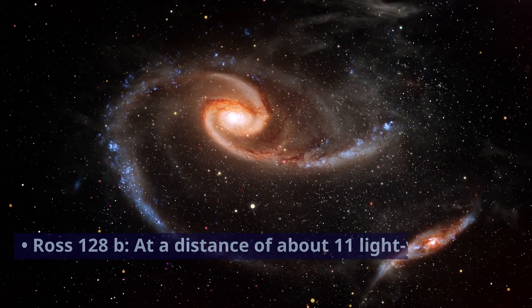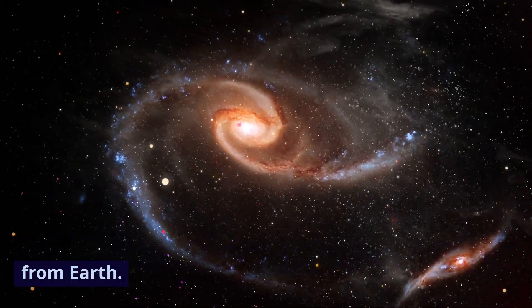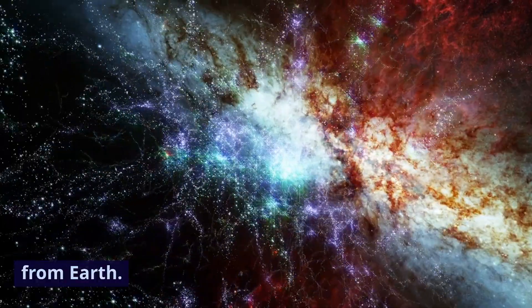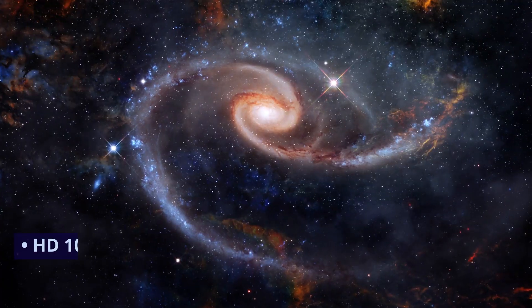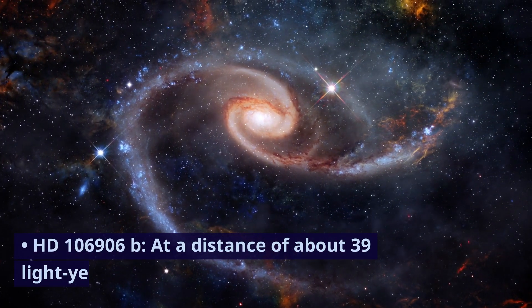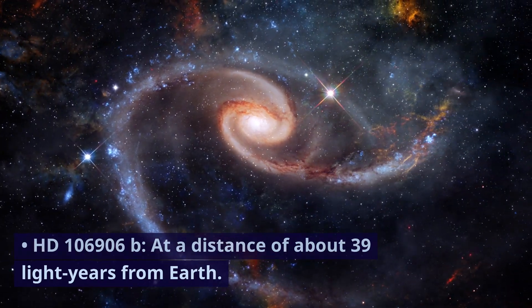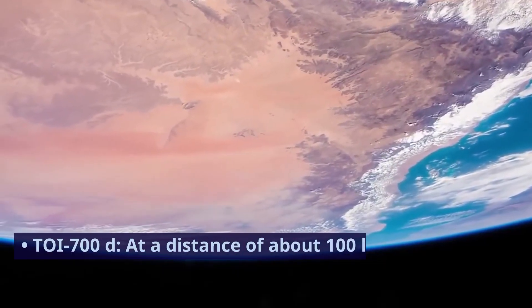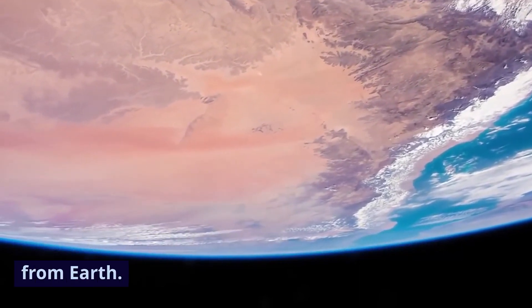Ross-128b, at a distance of about 11 light-years from Earth. LHS-1140b, at a distance of about 40 light-years from Earth. HD-106906b, at a distance of about 39 light-years from Earth. Toi-700d, at a distance of about 100 light-years from Earth.